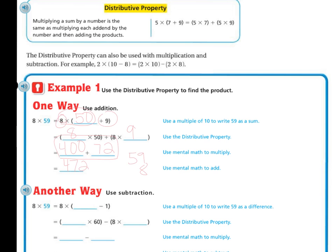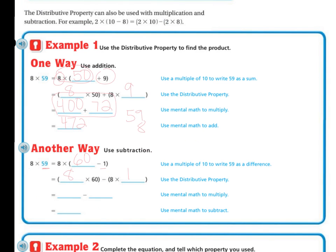So another way is I can use subtraction. So I have 8 times 59 then I have 8 times, well 59 is close to 60 right, it's just 1 away so I could say 60 minus 1. So again I could say 8 times 60 and then 8 times 1 and I know that 8 times 60 is 480 and 8 times 1 is 8.